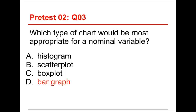When you're dealing with a nominal variable, that means categories, like male, female, or your major, or something like that. And the only choice of these ones that works is a bar graph, because you simply use a bar to indicate how many people are in each category.